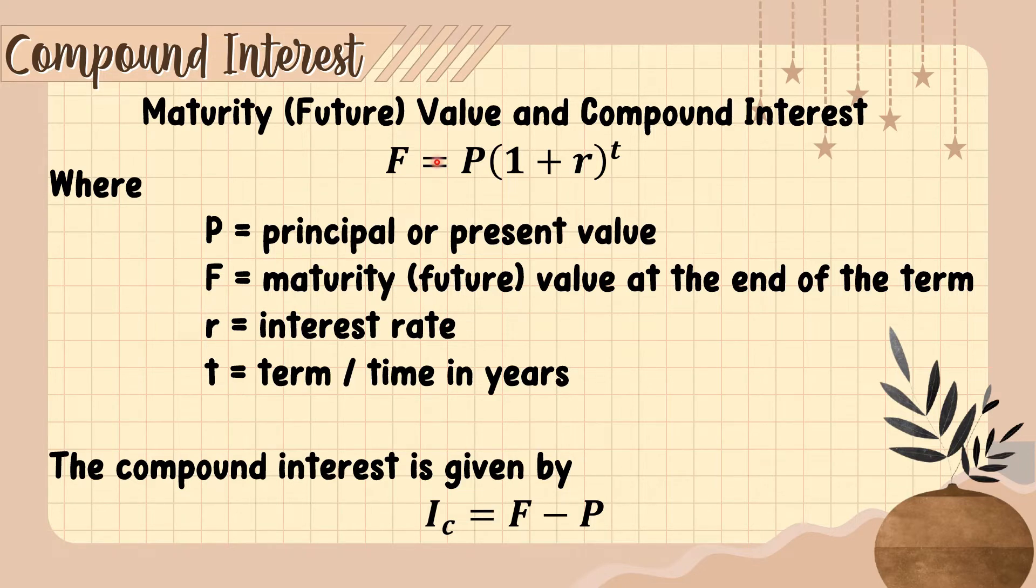The compound interest is given by the formula I sub C equals F minus P. Once you get the future value, you deduct the principal to get the compound interest.